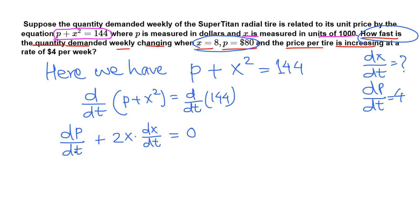Now we plug in the things, given things, and find the unknown. dp over dt is given here, that's 4. Okay, so this is 4 plus 2 times X. X is given here, 8. Okay, 8 times dx over dt is what we are looking for, that equals 0.